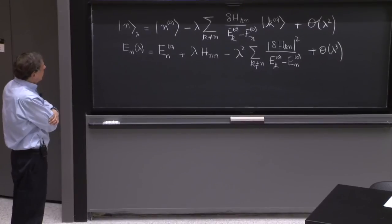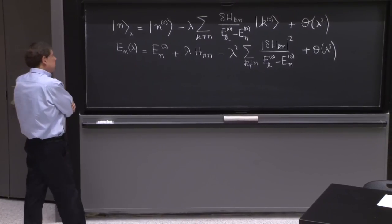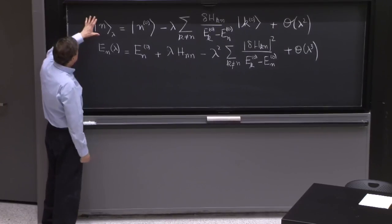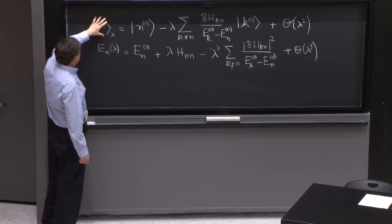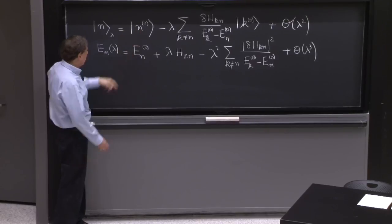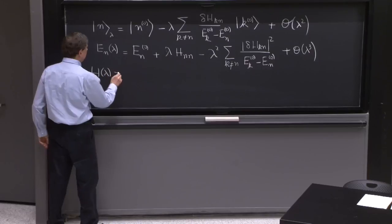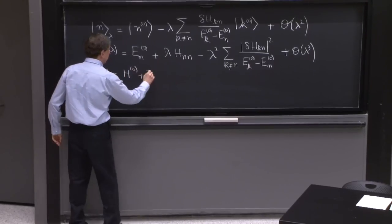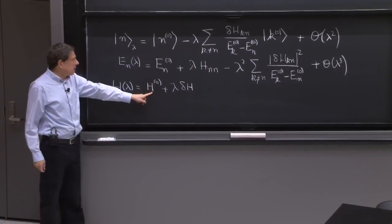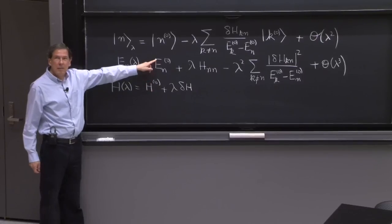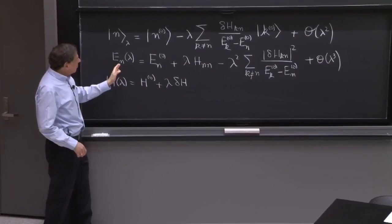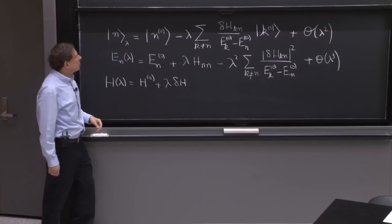So here in this formula that I've written are all the results we have so far. And the useful thing is to ask yourself whether you know what every symbol here means. This is the state, which is the deformation of the original state n0 of the Hamiltonian h0. We had a Hamiltonian h of lambda, which was equal to h0 plus lambda delta h.